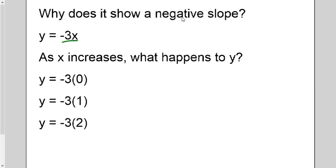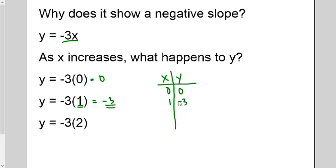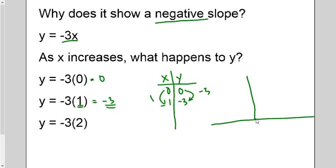A negative number times x gives a negative slope. Let's try y = -3x. When x is zero, y is zero. Negative three times one is negative three, so as x goes up, y dips down by three. That's the essence of a negative slope — as x increases, y decreases. When we graph this, it's not in the first quadrant; it's in the fourth quadrant, with points at (0, 0) and (1, -3), going down to the right.